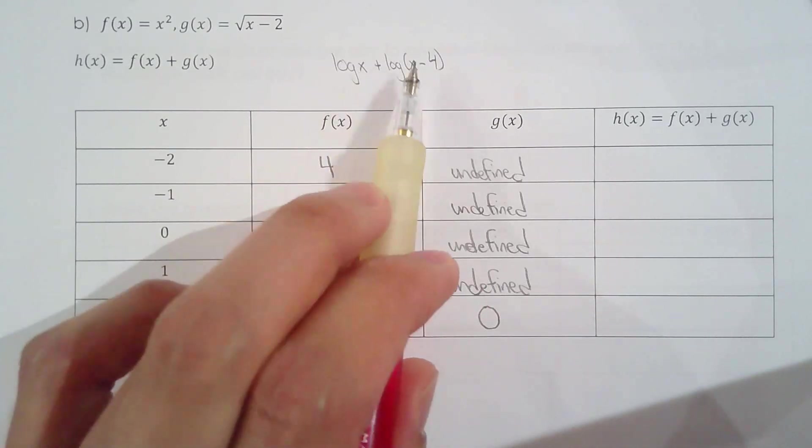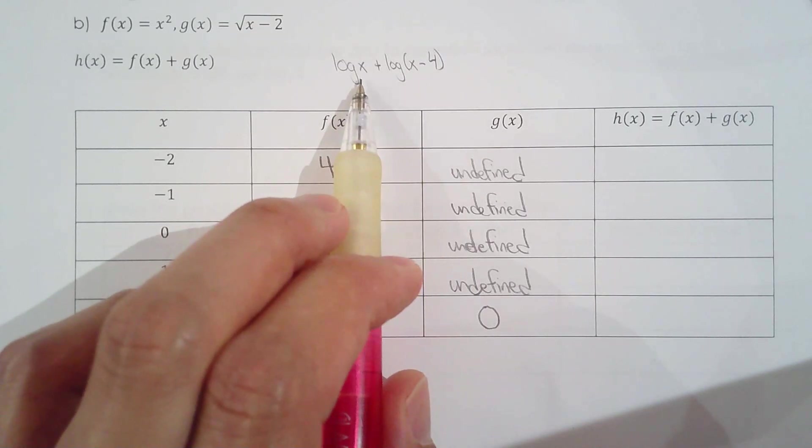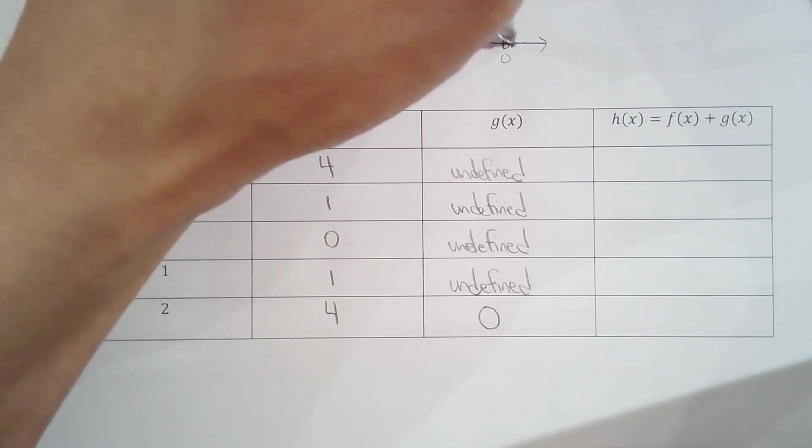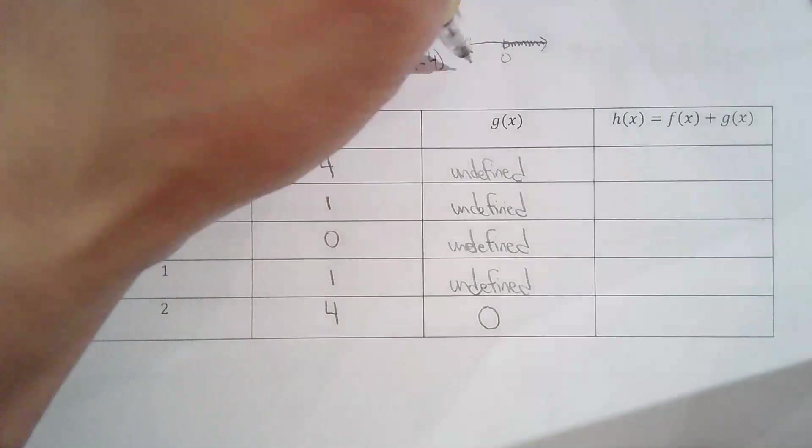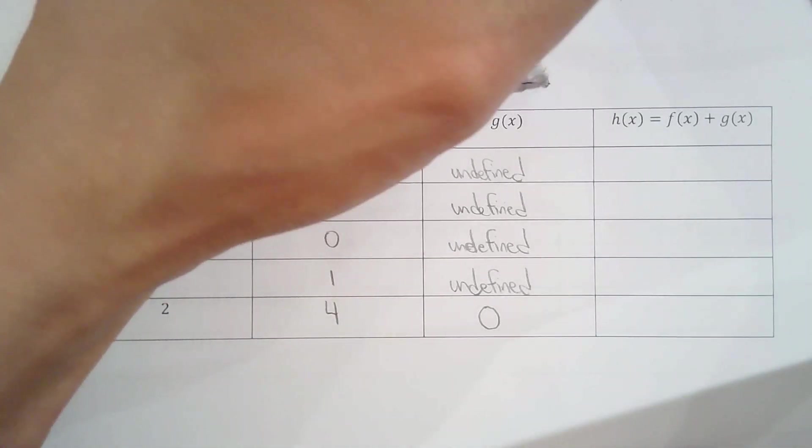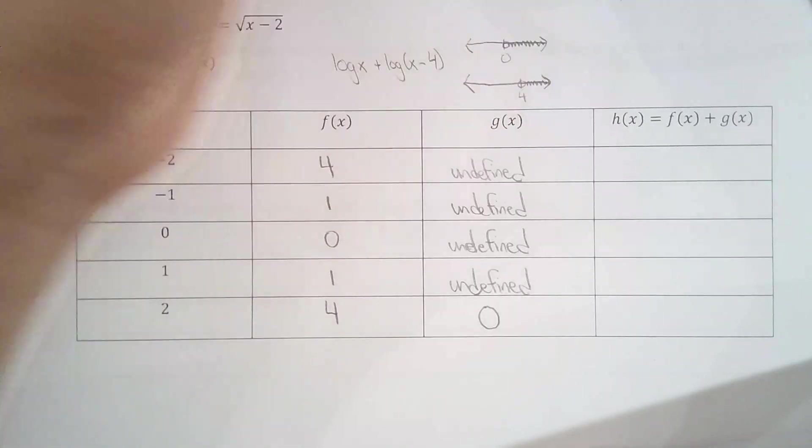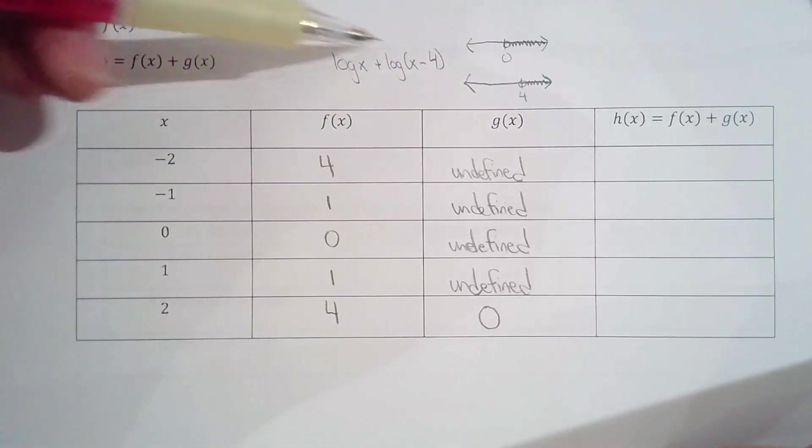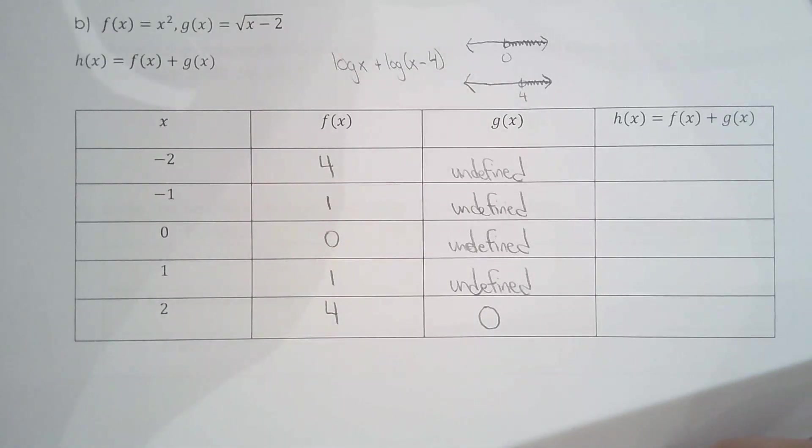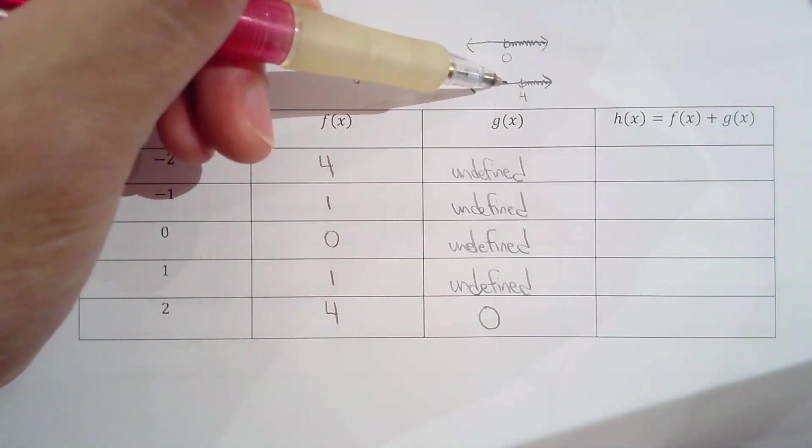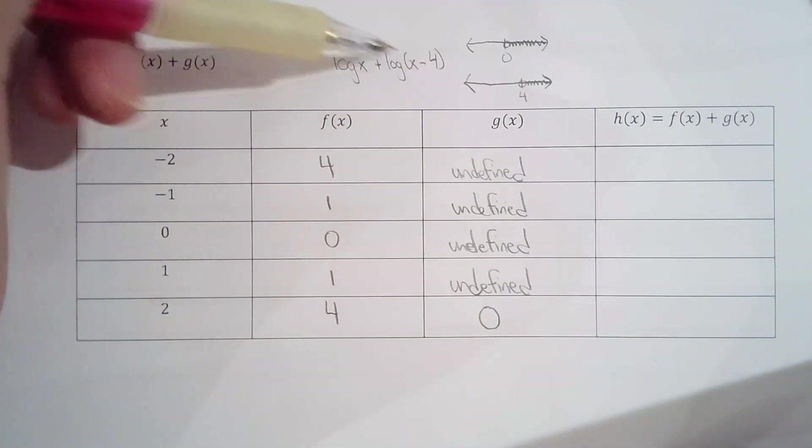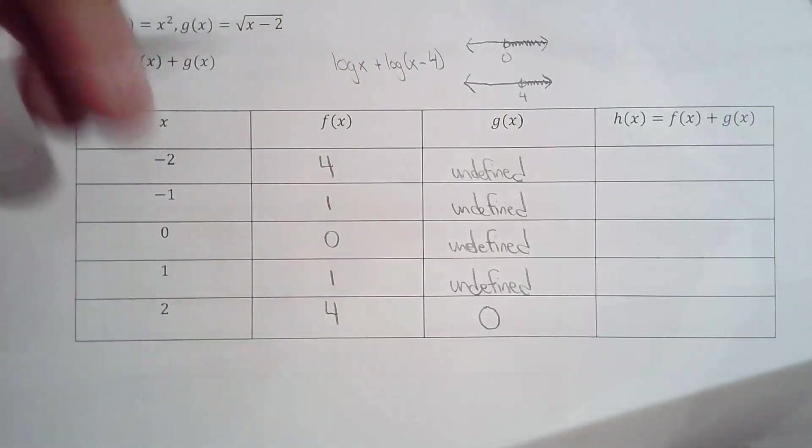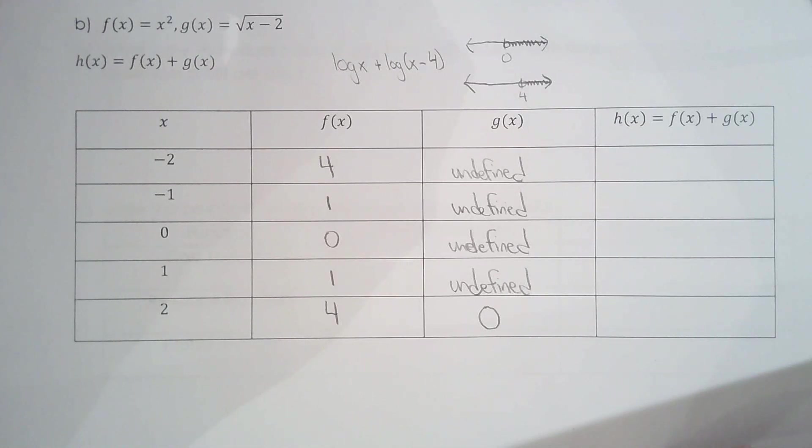Hopefully you remember back to what we did with logarithmic expressions when we stated restrictions. Let's review. Let's say log of x plus log of x minus 4. To state the restriction on this expression, you need to make sure that both of these logarithmic terms are defined. For this example, we drew two number lines. We found values where log x is defined and we found values where log of x minus 4 is defined.